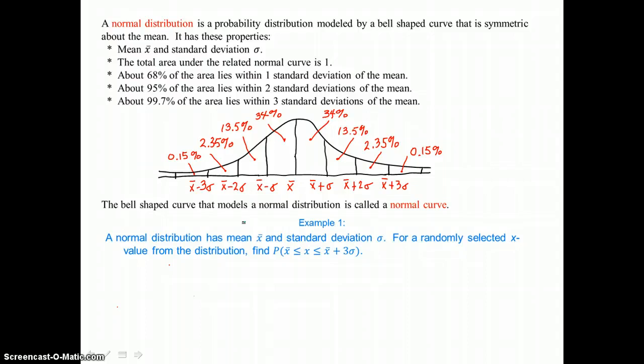If you add all of the percents, they will sum to 1. The bell-shaped curve that models a normal distribution is called a normal curve.